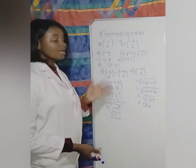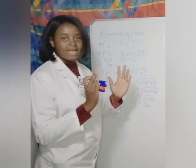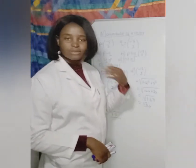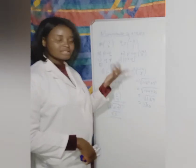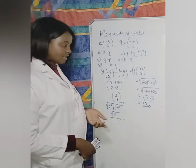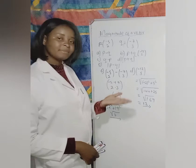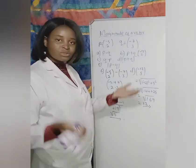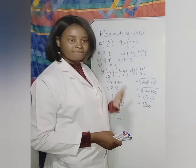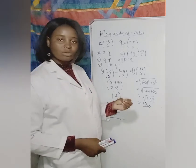So what I want you to take from this lesson: when you see a vector with two lines around it, it means you must calculate the magnitude, which is the length of that vector. To calculate it, square the x value and the y value, add them together under a square root sign — the square root of x squared plus y squared. Always take the positive answer, because we cannot have a negative length. That's all for today — see you in the next lesson.